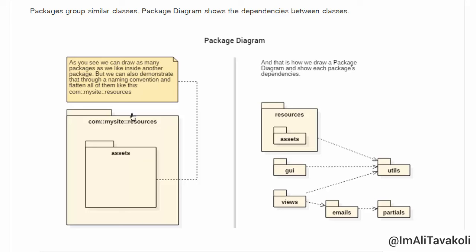In this example, we're showing that you can draw as many packages as you like inside another package, but you can also demonstrate them through a naming convention and flatten them all. For example, instead of drawing the com package, then my-site inside it, then resources, then assets, I've flattened all three and only drawn the assets package. This is useful for simpler package diagrams.